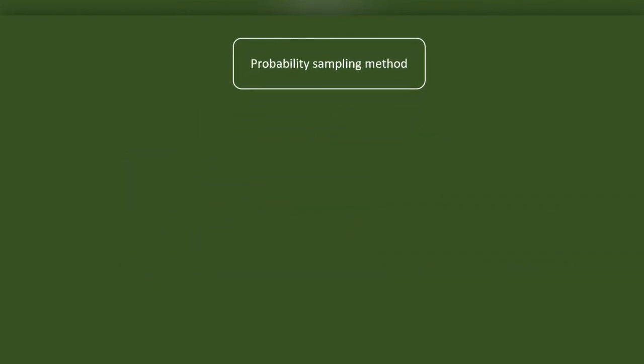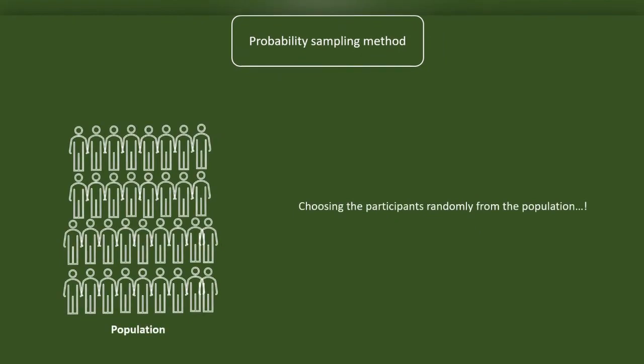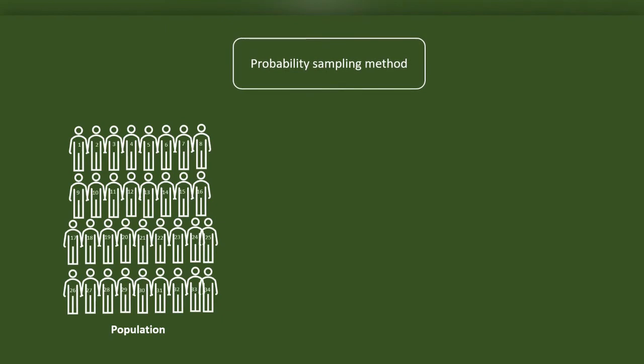In probability sampling method, we will choose the participants randomly from the population. Hence this type of sampling method is also called random sampling method. Random selection can be easily practiced if the population is definite.